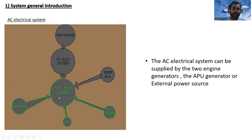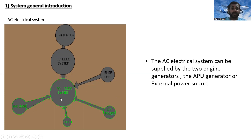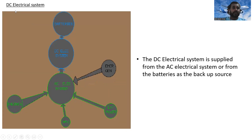The AC electrical system can be supplied by two engine generators, the APU generator, or an external power source. You can see the AC electrical system diagram here — it is supplied by the two engines, the APU generator, or external power.